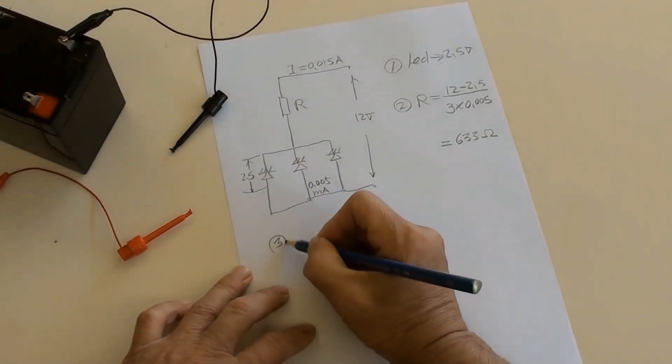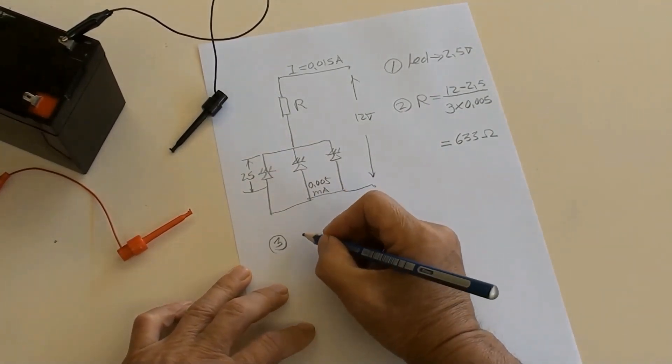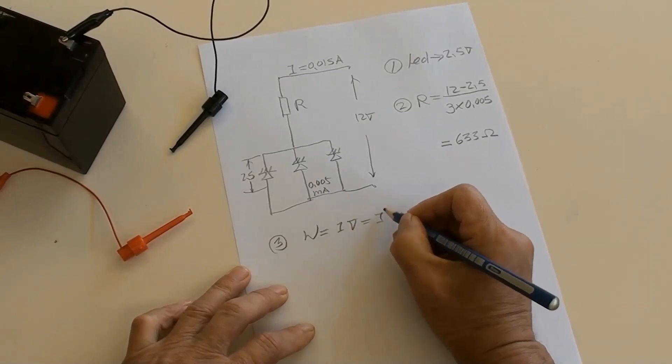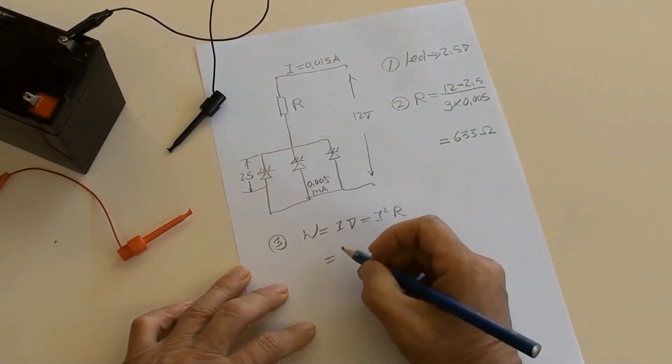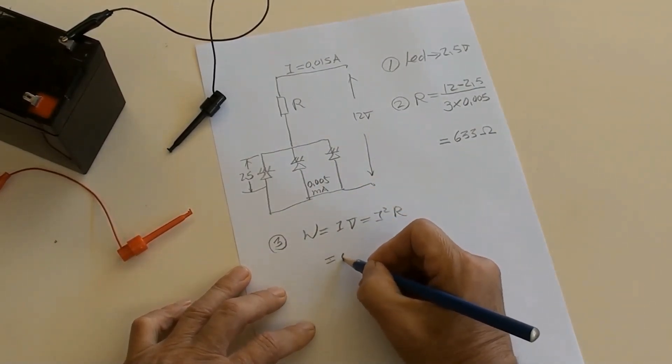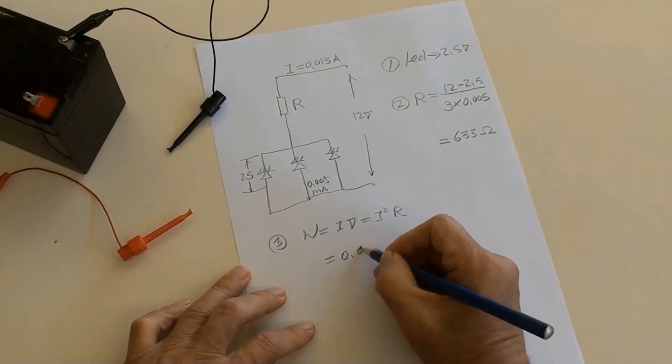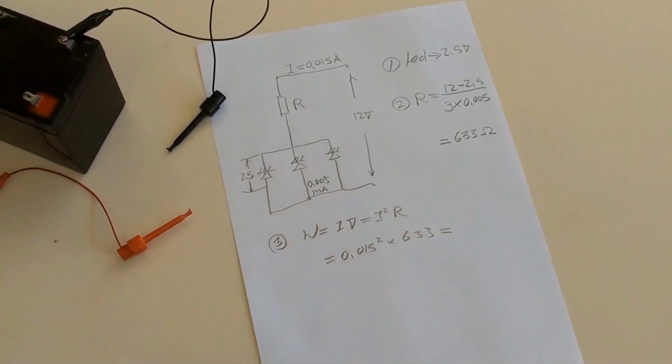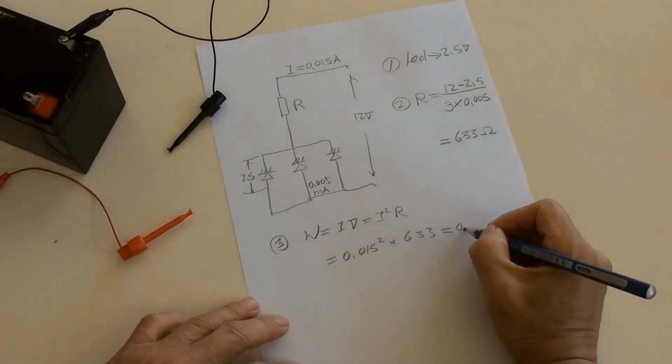Third, resistors dissipation equals I times V equals I square times R, equals 0.015 square times 633 equals 0.14 watt.